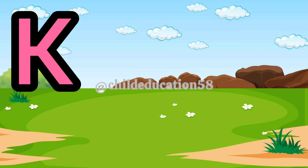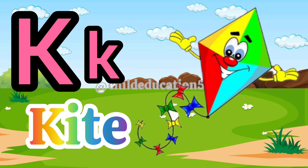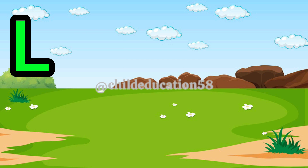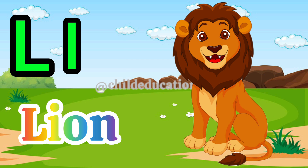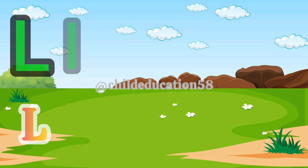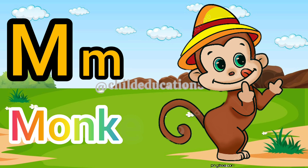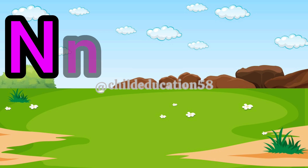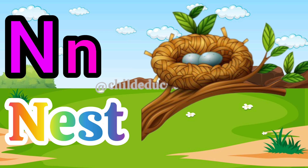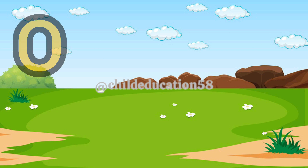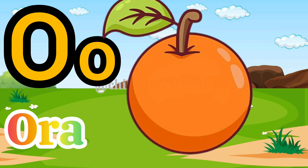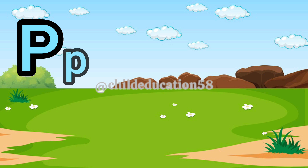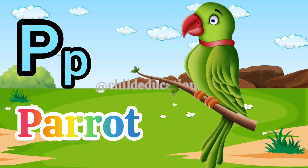Capital K, small k, K for kite. Capital L, small l, L for lion. Capital M, small m, M for monkey. Capital N, small n, N for net. Capital O, small o, O for orange. Capital P, small p, P for parrot. Capital Q, small q, Q for queen.